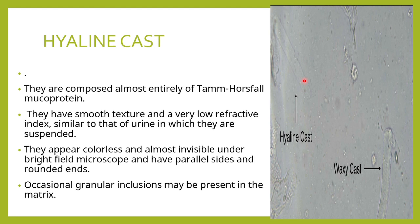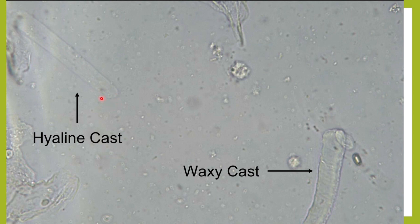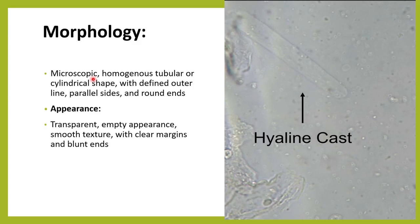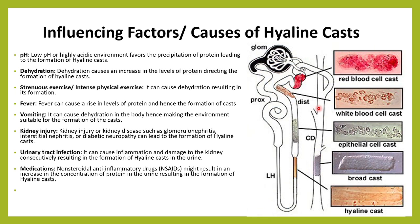Because of the very low refractive index, hyaline casts are almost transparent — nearly invisible under a normal microscope unless you reduce the light. Occasional granular inclusions may be seen. The cast surface is smooth and parallel with a blunt end, and it is very transparent and homogeneous. It has the shape of a tubule, can be cylindrical, has a well-defined outer line, rounded ends, smooth texture, and clear margins.